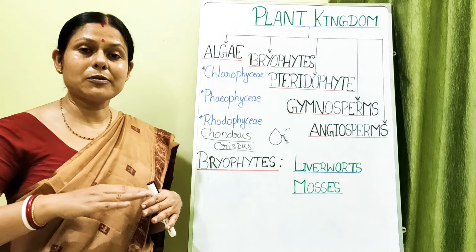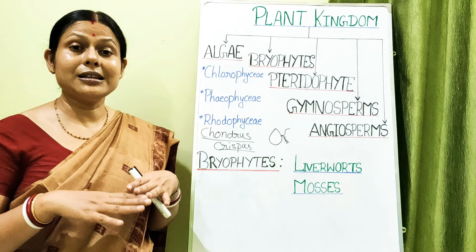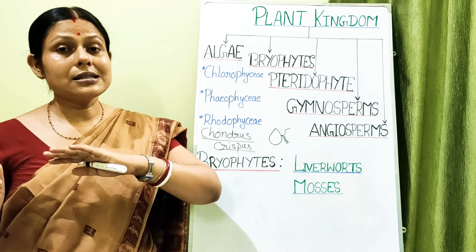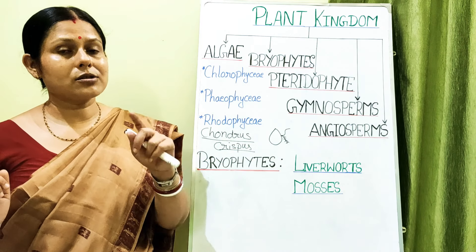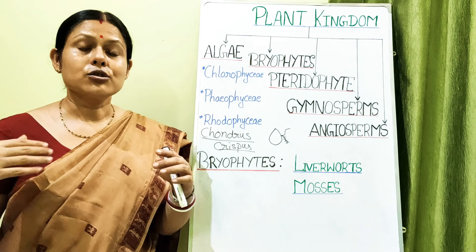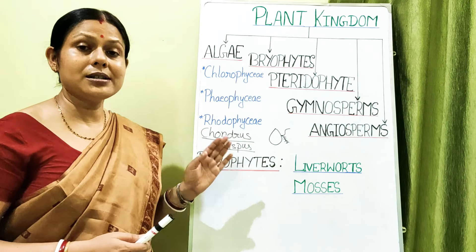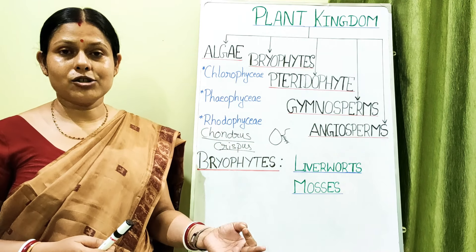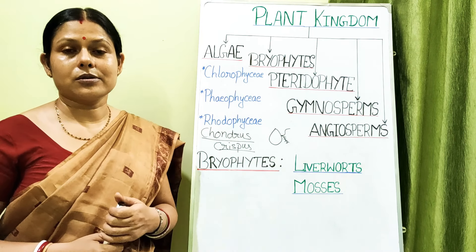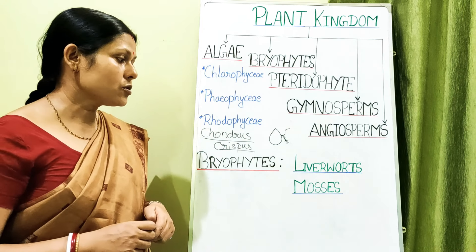Plant succession means which type of plant comes first, then which group replaces it, until finally a climax vegetation is reached — the ultimate vegetation for that particular area. Lichens and bryophytes are the initiators of plant succession on any newly formed land.